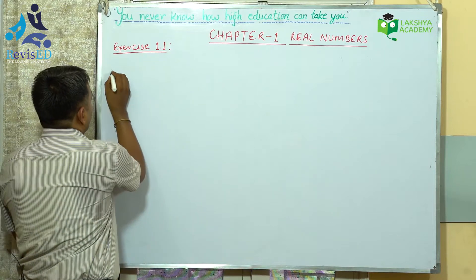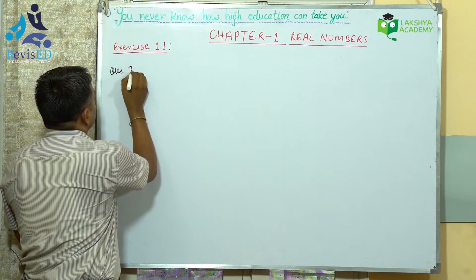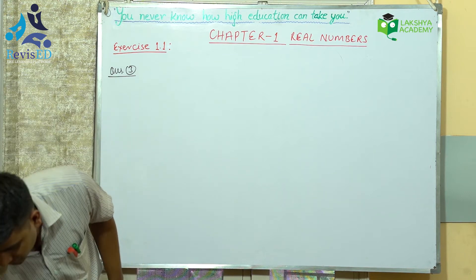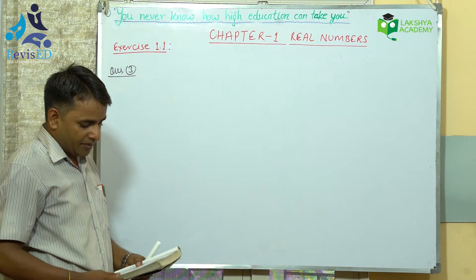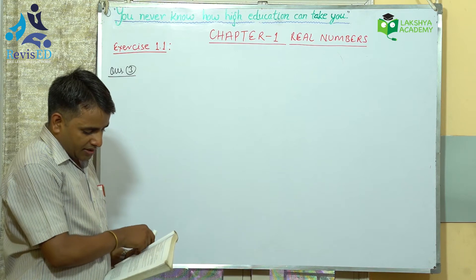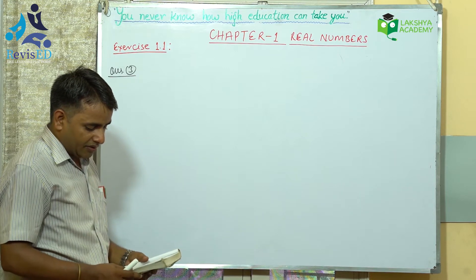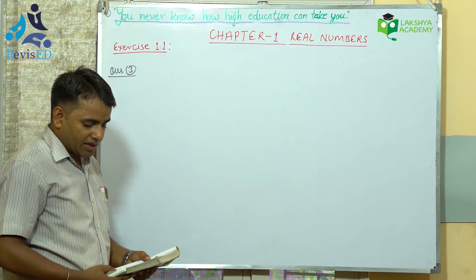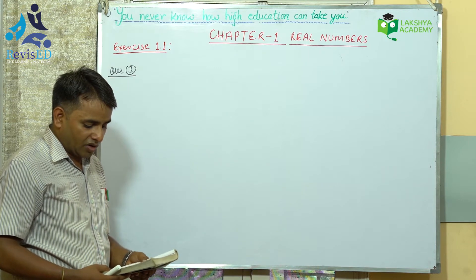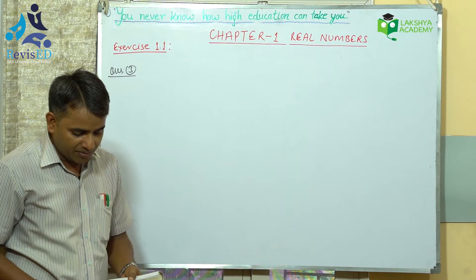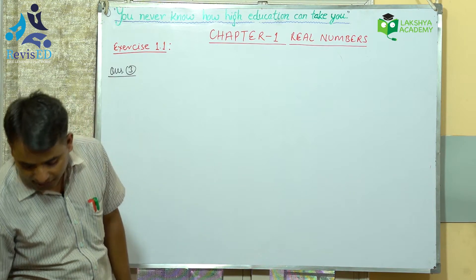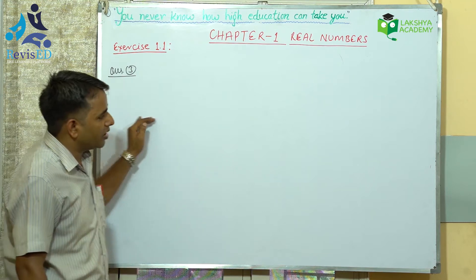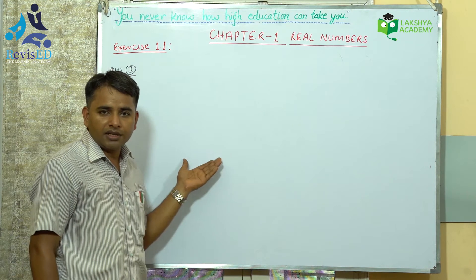The question is: an army contingent of 616 members is to march behind an army band of 32 members in a parade. The two groups are to march in the same number of columns. What is the maximum number of columns that they can march? We need to find out the maximum number of columns where the army contingent can march.